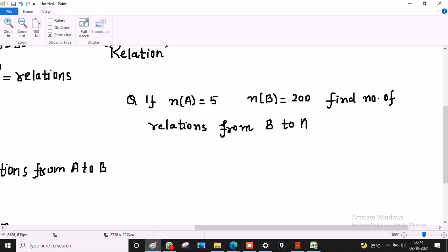Can you tell me how many relations are possible? Yes. It's 2 raised to power 1000. Because we need to find number of elements in B cross A. That is 1000.